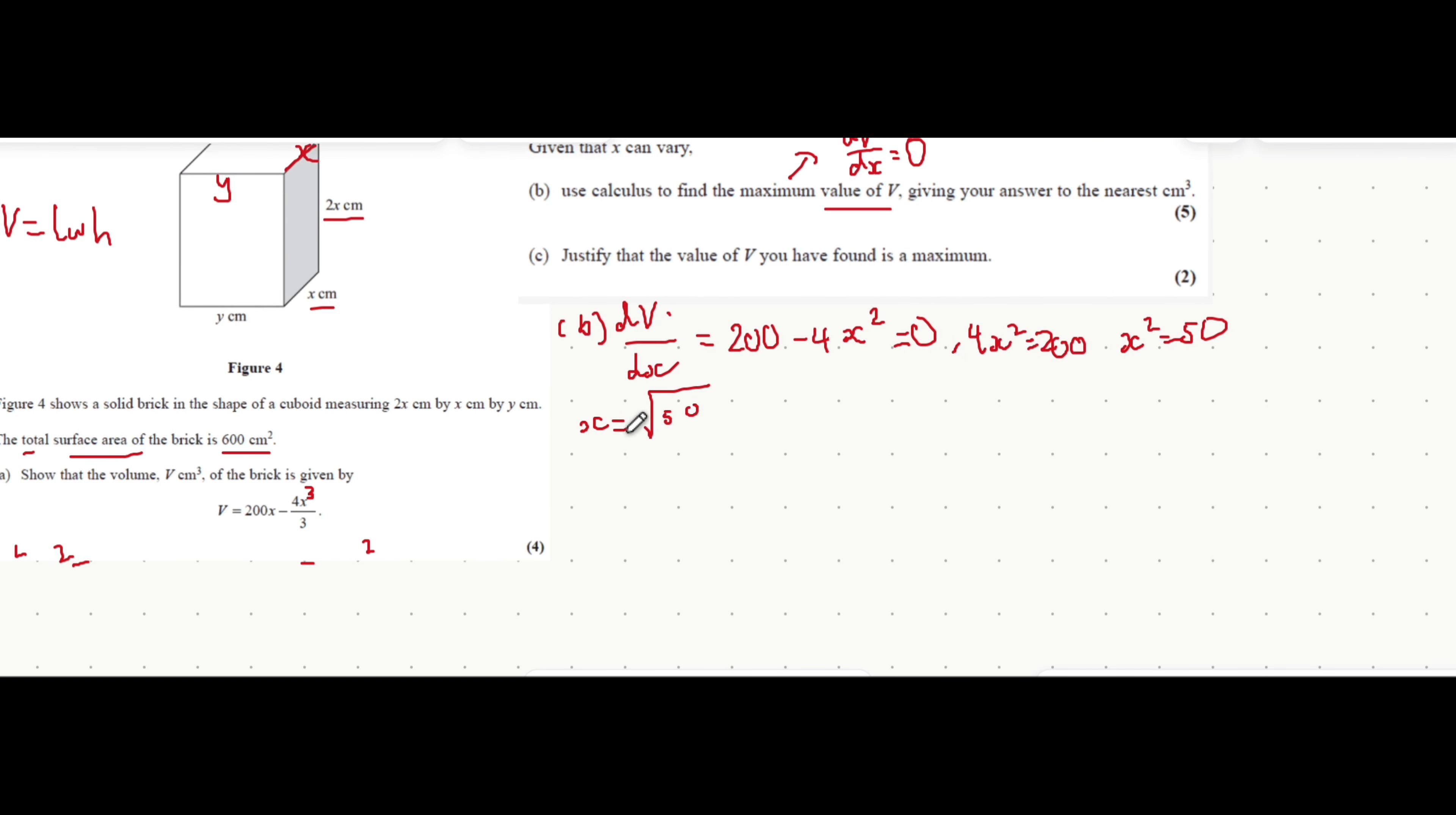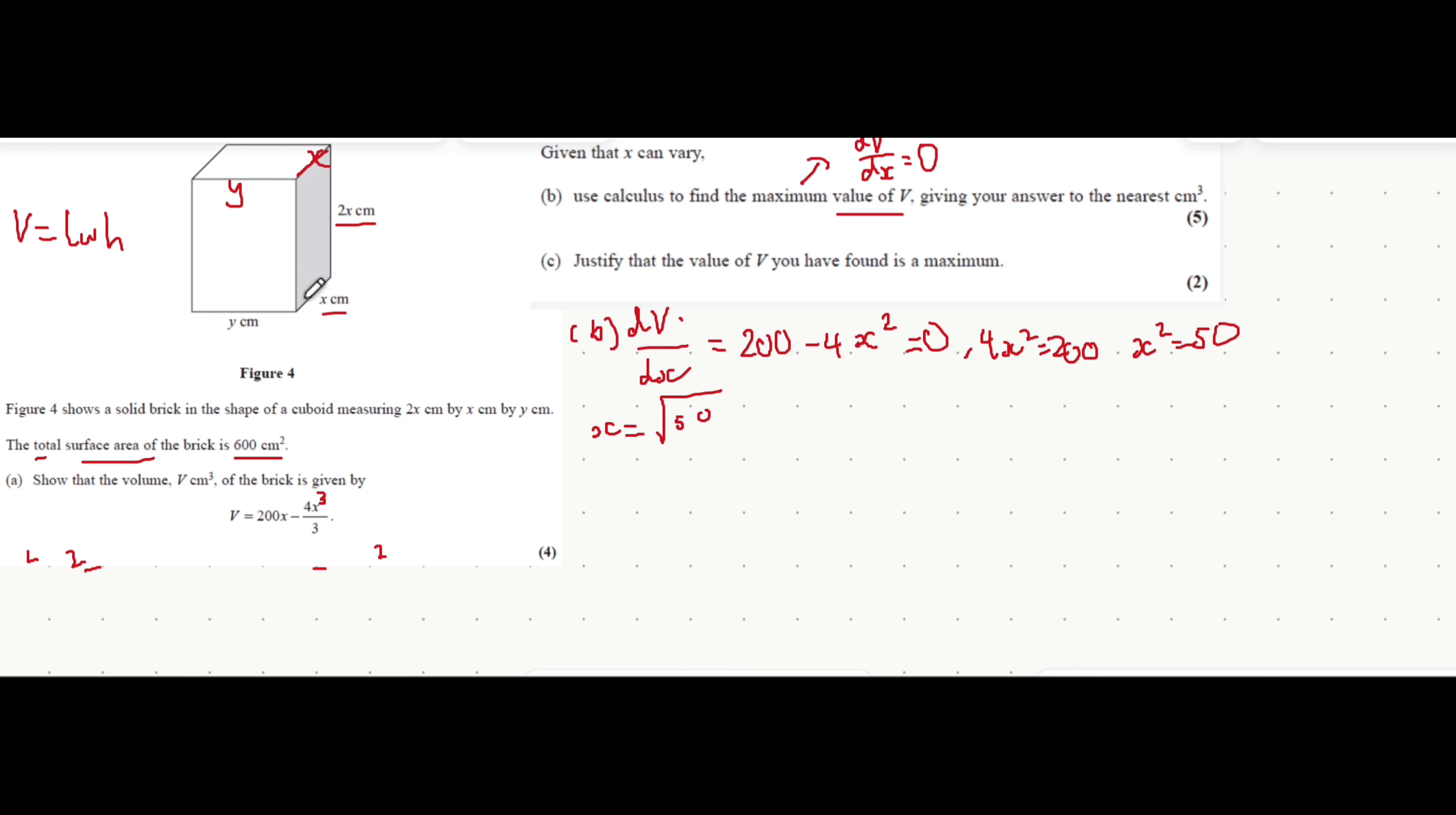Now we wouldn't take the negative root because if we took the negative root, it doesn't make sense as that would mean the width is negative. You can't have a negative width. Now that we found the maximum value of x that creates the maximum value of v, we now put that into the equation of v and that gives you the maximum value of v.